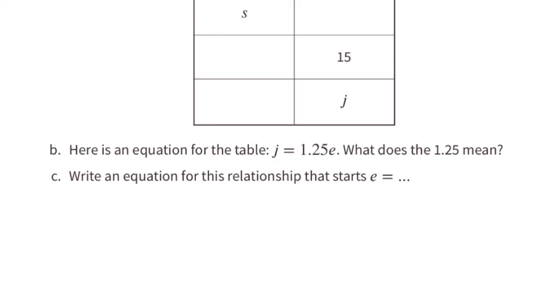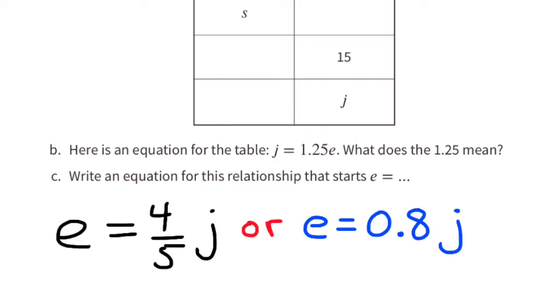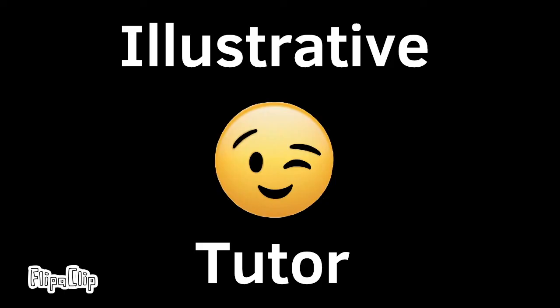Part C: write an equation for this relationship that starts E equals. That equation would be E equals four-fifths J, or E equals 0.8J. That means Elena reads four-fifths of the pages Jada does. You can support my YouTube channel by subscribing and leaving a comment below. Thanks for watching and I'll see you next time.